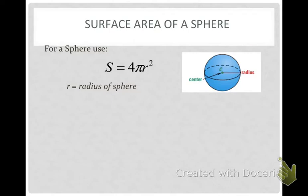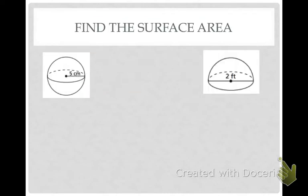Okay, so here's the formula to find the surface area of a sphere. It is 4 times pi r squared. Now, this is surface area, so it's units squared, where r is the radius of the sphere.